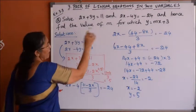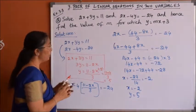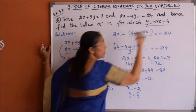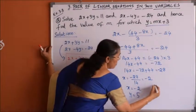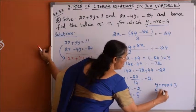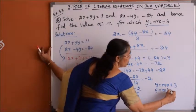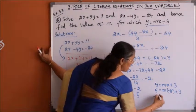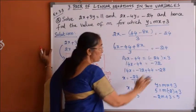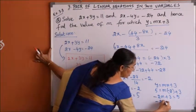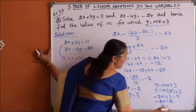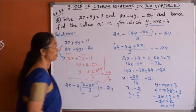Now we find the value of m for which y equals mx plus 3. Substituting x equals minus 2 and y equals 5 into the equation: 5 equals m times minus 2 plus 3, so minus 2m plus 3 equals 5. Rearranging, minus 2m equals 5 minus 3 equals 2, therefore m equals 2 divided by minus 2, so m equals minus 1.